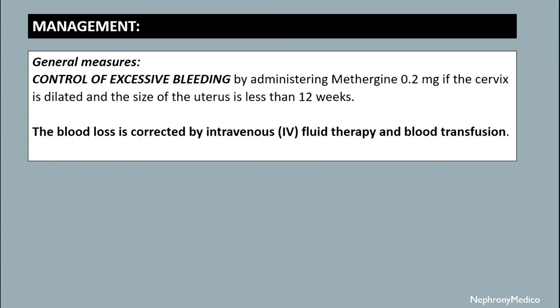Management. The general measures include control of the excessive bleeding by administering methergine 0.2 mg if the cervix is dilated and the size of the uterus is less than 12 weeks. The blood loss is corrected by intravenous fluid therapy and blood transfusion.